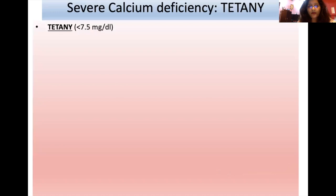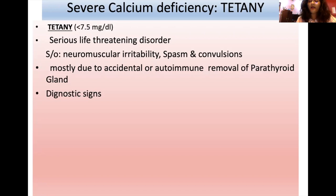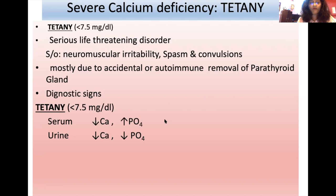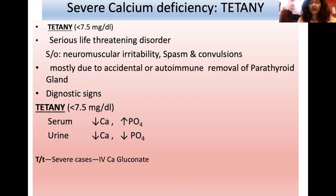Severe calcium deficiency results in tetany — a serious, life-threatening disorder. When calcium drops below 7.5 mg/dL, it leads to tetany, characterized by neuromuscular irritability, spasms, and convulsions. The most common cause is accidental or autoimmune removal of the parathyroid gland. In tetany: serum calcium is low, phosphate is high, and urinary calcium and phosphate are both reduced. Treatment requires rigorous IV calcium administration. Importantly, tetany is never caused by vitamin D deficiency alone — vitamin D deficiency leads to rickets, not tetany.